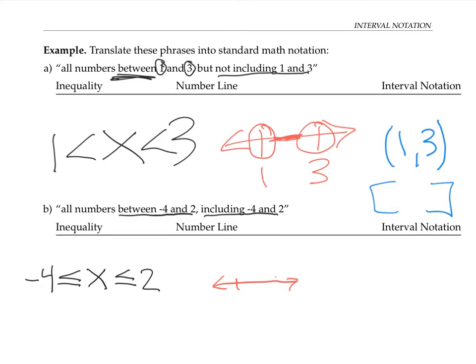The number line graph for this problem is slightly different. We still have our key values, negative 4 and 2, but instead of an open circle, we instead use a closed circle representing that it is including negative 4 and 2. We complete this with a line in between.